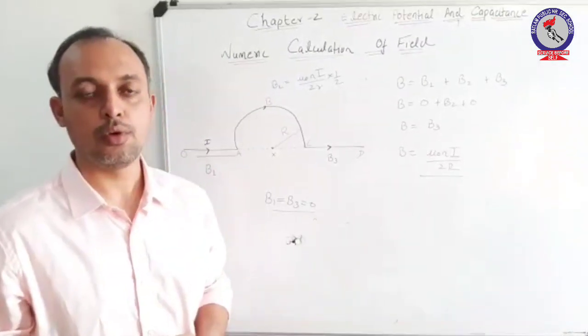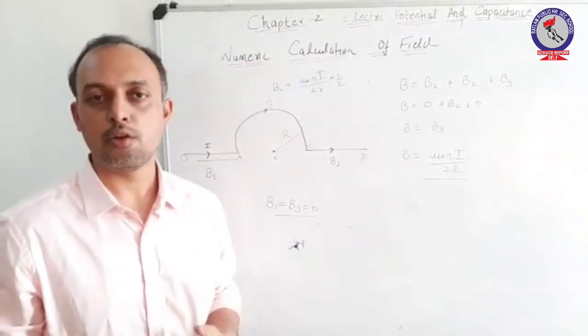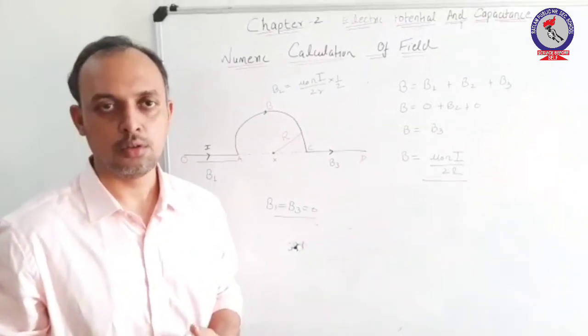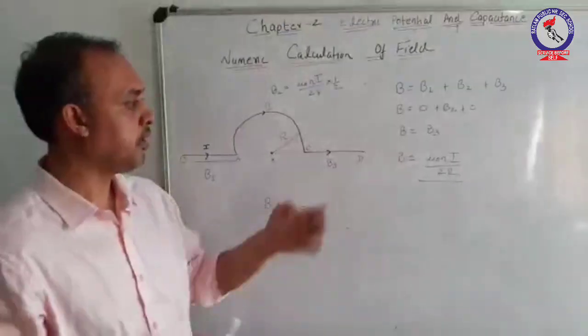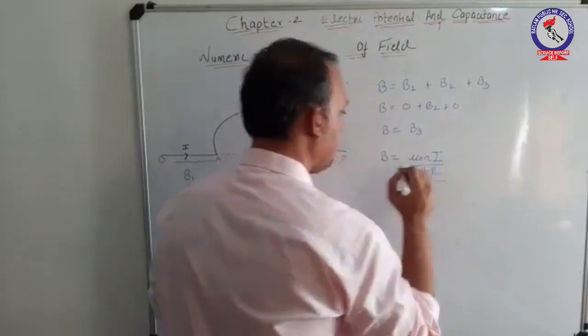The figure which appears to be very complex can be solved in a simple manner just by reviewing the concept of Biot-Savart's law. You can observe the final expression: μ₀Ni by 4R.